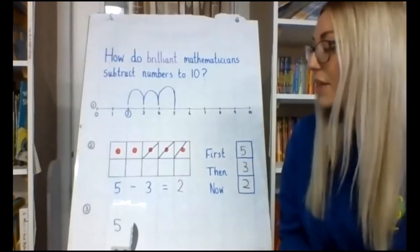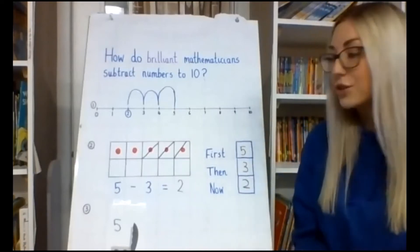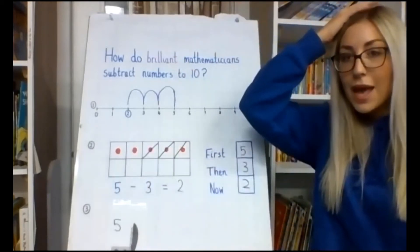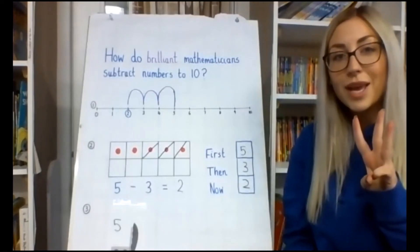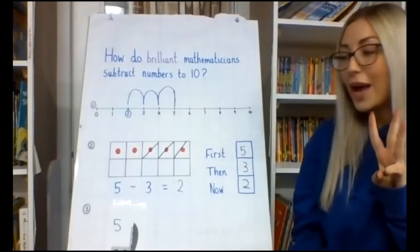And then finally for our last method, this one is something that we have been practicing a lot because it is quite tricky. So we are going to put 5 in our heads, and we are going to put 3 on our fingers. Now unlike last week, instead of counting forwards and adding, we are going to count backwards which we are taking away.